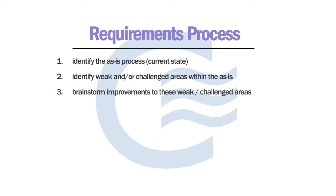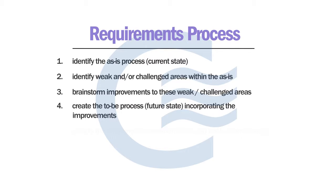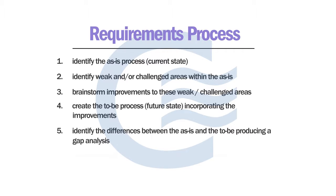Third, brainstorm improvements to these weak areas or challenged areas. Fourth, create the to-be process or the future state incorporating those improvements. Fifth, identify the differences between the as-is and the to-be, producing a gap analysis. Sixth, create an implementation plan for the gap analysis.